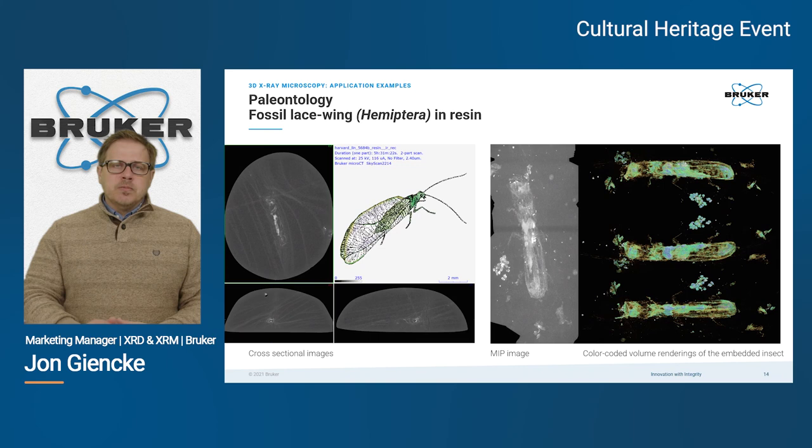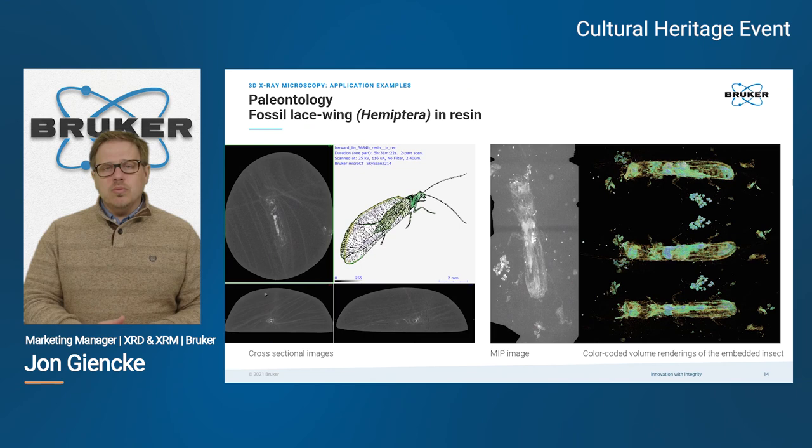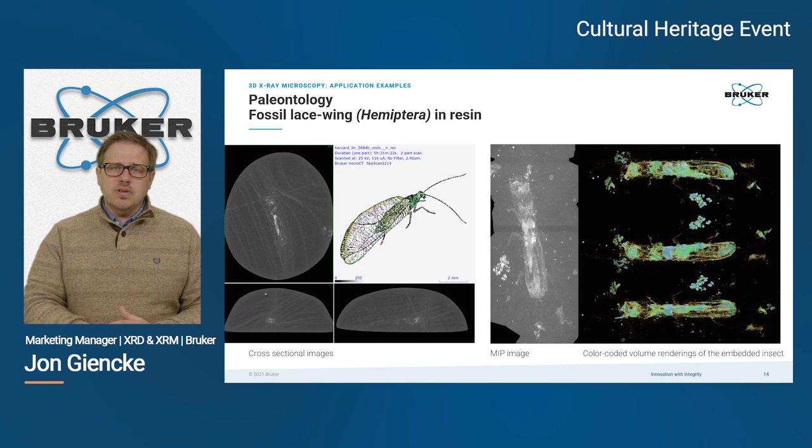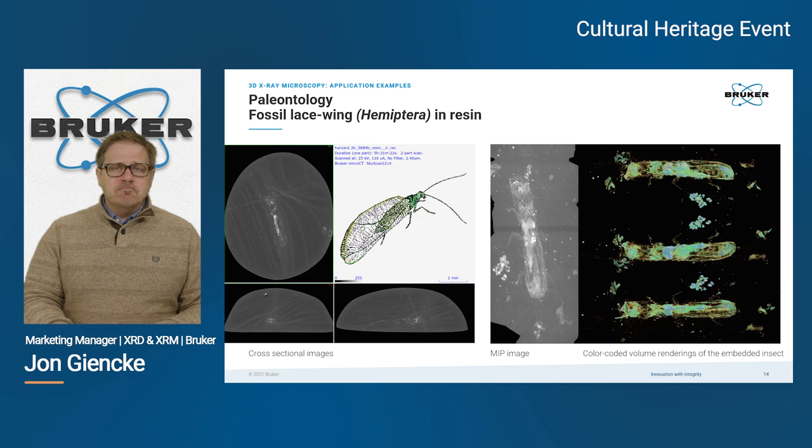In the field of paleontology, we can examine embedded fossils without removing them from their matrix material — in this case an insect. We get a very clear view of the insect and its fine features, perform virtual cross-sectioning without destroying the specimen, and even print and enlarge it for closer examination of a creature that existed long ago.